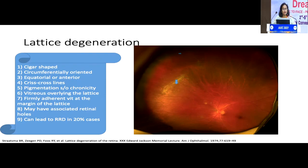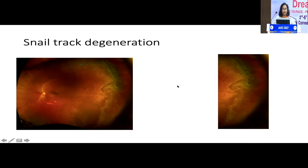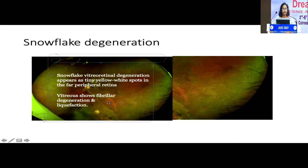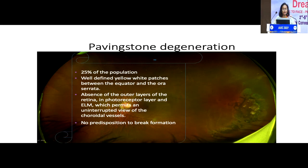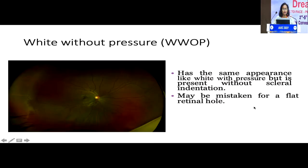This is an example of lattice degeneration in the superonasal quadrant of the left eye. This is snail track degeneration in the temporal quadrant of the left eye. The whitish-yellowish spots in the temporal periphery are indicative of snowflake degeneration. This is an atrophic retinal hole in the inferotemporal quadrant — no active vitreoretinal traction, so we label it as an atrophic retinal hole. The yellowish-white patches with pigmentation are indicative of paving stone degeneration.